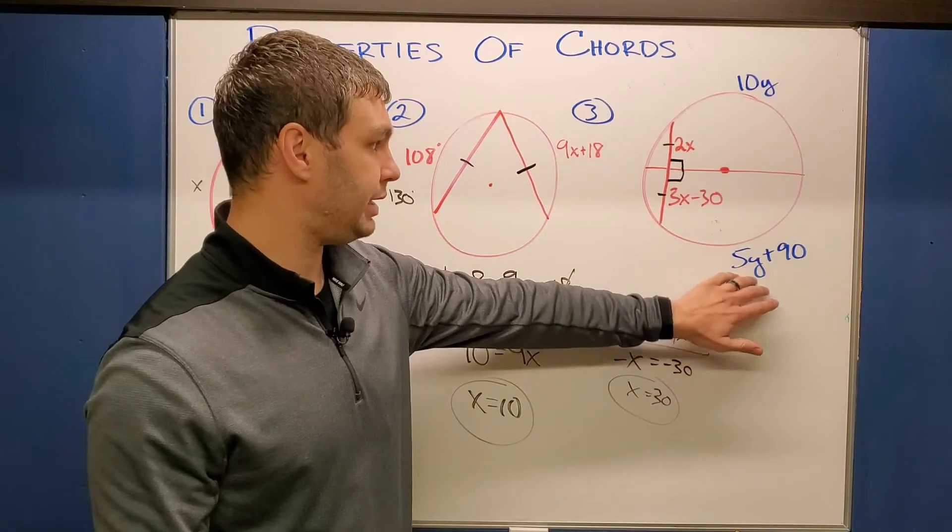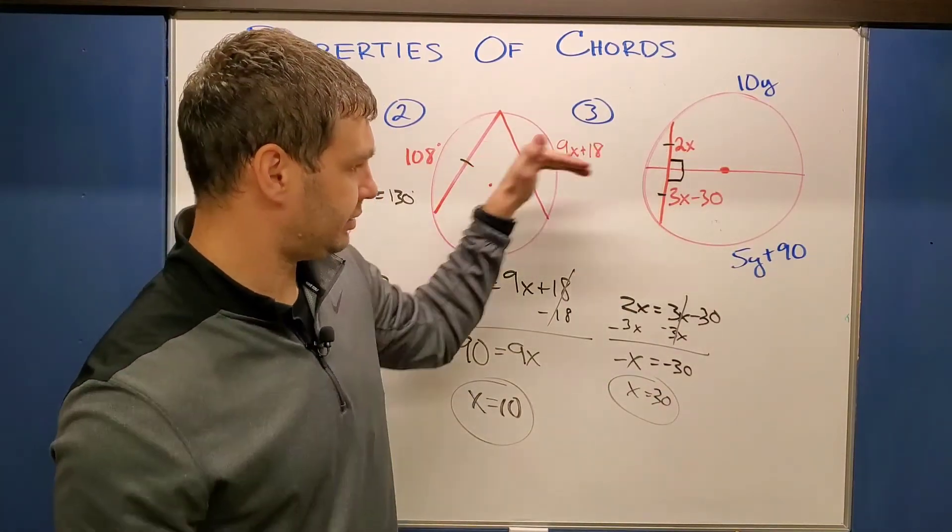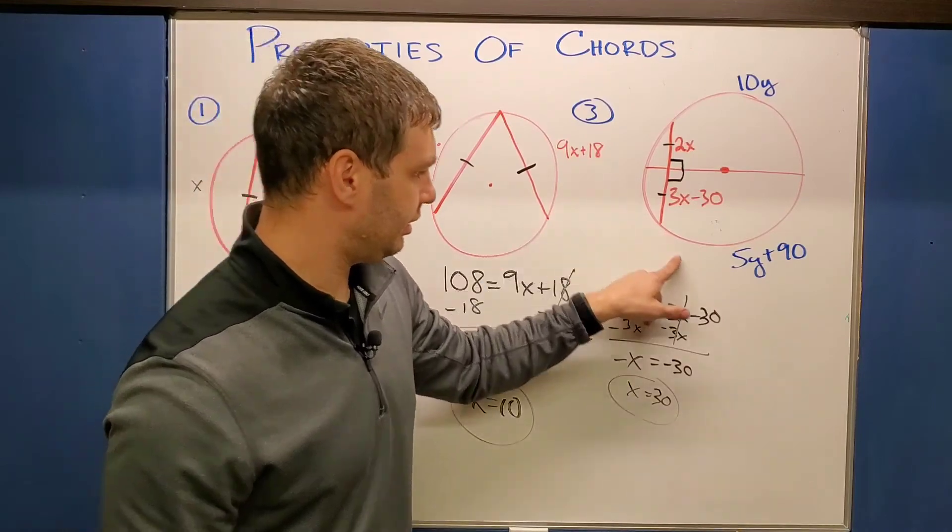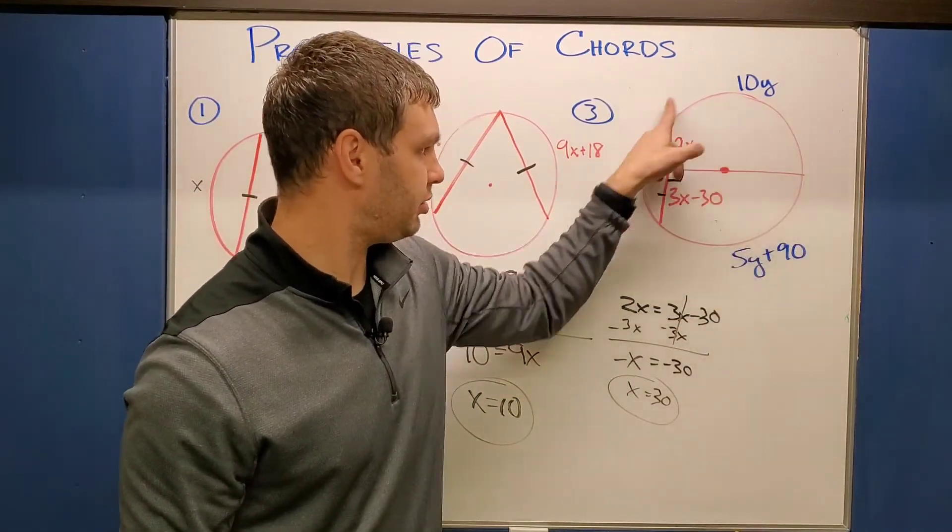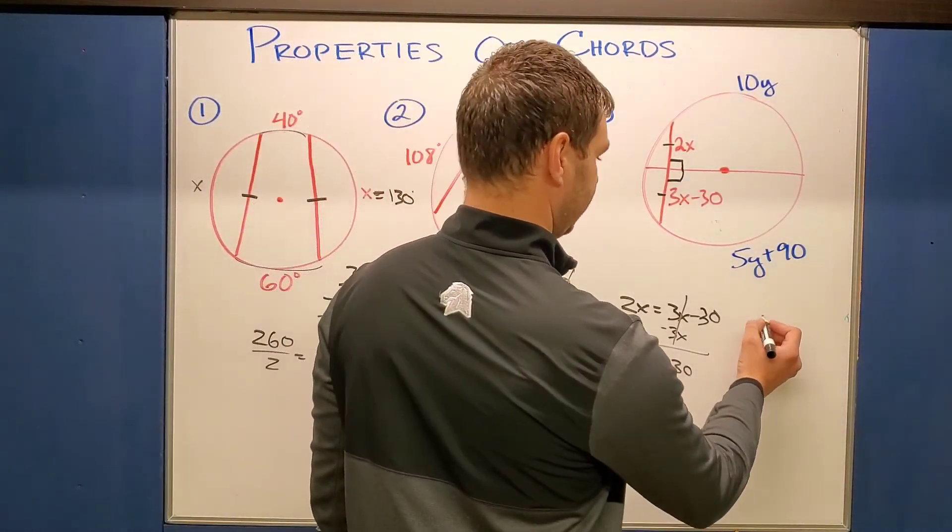Now, one more variable, that's the Y's. So we also know that if this and this are congruent, and that's our diameter, then this arc and this arc are also going to be congruent. So again, I can just set those two things equal to each other and solve.